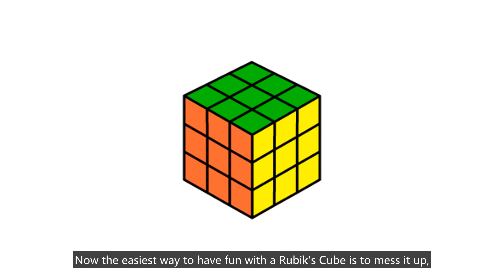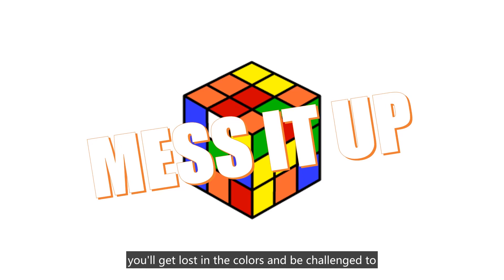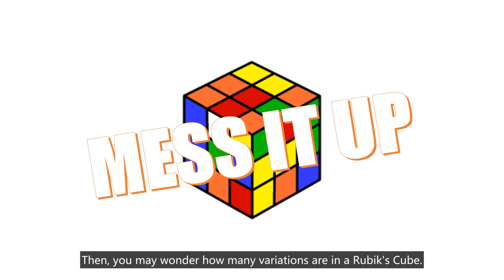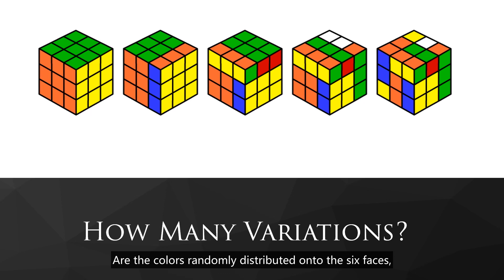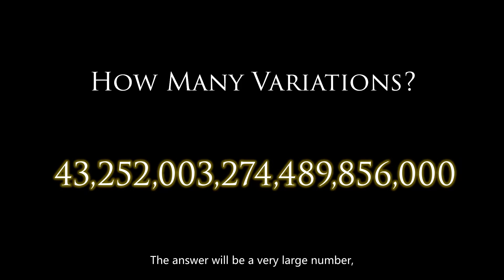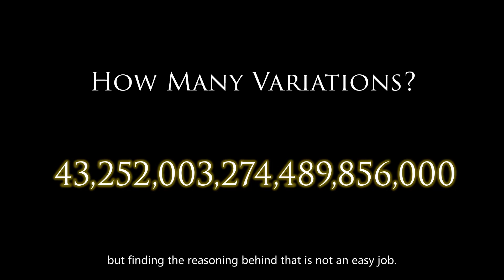Now, the easiest way to have fun with the Rubik's cube is to mess it up, because people love messing things up to break the sense of unity. By 20 or more rotations of the rows, you'll get lost in the colors and challenged to find your way back to the complete cube again. Then you may wonder: how many variations are in the Rubik's cube? Are the colors randomly distributed onto the 6 faces, or do they form another sense of unity? The answer will be a very large number, which is about 4.3 times 10 to the 19th power. But once you dissect the problem into smaller ones, there is a way to calculate this number, though finding the reasoning behind that is not an easy job.